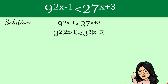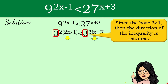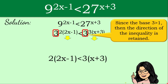Our next step: in our inequality, we now have the same base. Since base 3 is greater than 1, the direction of the inequality is retained. That means we copy the inequality symbol as is. So we copy the exponent — 2 multiplied by the quantity 2x minus 1 — keeping the less-than symbol, then 3 times the quantity x plus 3 on the right side.